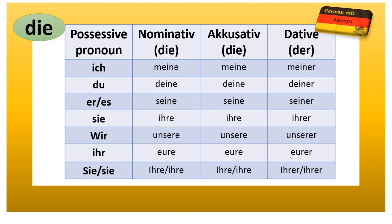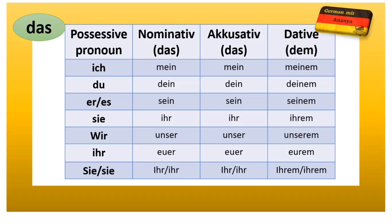Let's learn further for 'das', which is neuter. 'Das' and 'das' — again in nominative and accusative both are same. So: mein, dein, sein, ihr, unser, euer, ihr, ihr. And again for dative it is 'dem', so the ending will be '-em'.